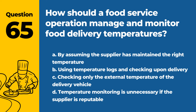Question 65. How should a food service operation manage and monitor food delivery temperatures? a. By assuming the supplier has maintained the right temperature. b. Using temperature logs and checking upon delivery. c. Checking only the external temperature of the delivery vehicle. d. Temperature monitoring is unnecessary if the supplier is reputable. Answer: b. Using temperature logs and checking upon delivery. This ensures that food is received at safe temperatures.